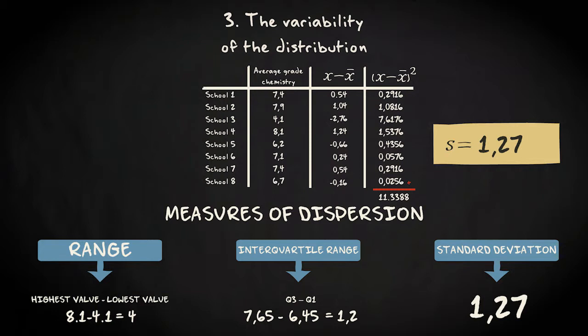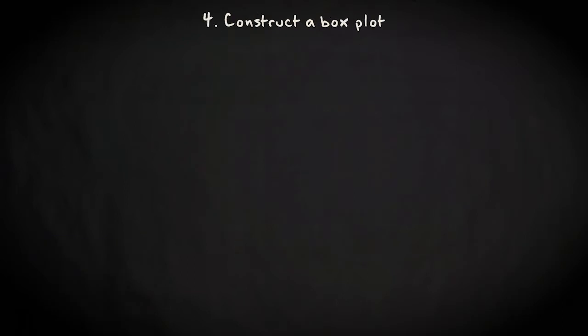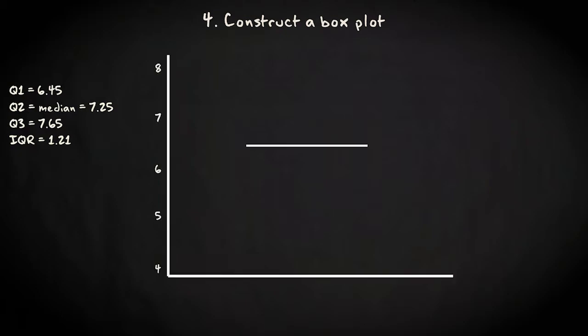The fourth thing we wanted to do with our data was making a box plot. We already have all the information we need. We have Q1 and Q3. They determine the borders of our box. So our box goes from here, 6.45, to here, 7.65. We display the median, or in other words Q2, with a horizontal line here at 7.25.